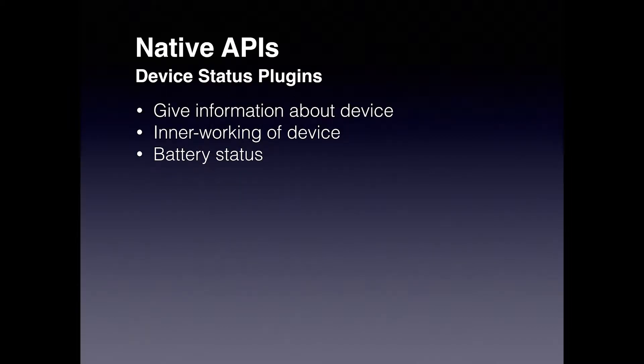Device status plugin gives back information or triggers an event related to the inner working of the device. Here we are going to explain more about it by looking at the battery status plugin, which returns the current charge of the battery and whether the battery has gone low or high.